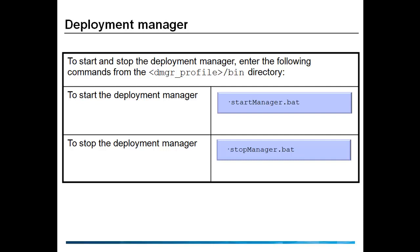You should be able to find startManager.bat or .sh file and stopManager.bat or .sh file. To start the deployment manager, invoke startManager.sh or .bat. To stop the deployment manager, invoke stopManager.sh or .bat file.